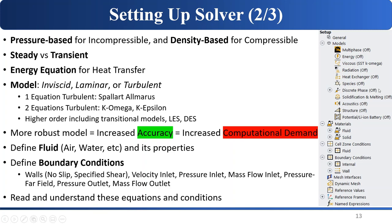In the general solver settings in ANSYS Fluent, you choose pressure-based or density-based. For incompressible flow, you use pressure-based because the density isn't changing — that's the definition of incompressible flow. For compressible flow where density changes, you want a density-based solver. You also want to choose steady-state or transient. Transient is when you want to see how things change in time — vortex shedding, eddies, the time-changing evolution of a fluid system. For general drag-lift analysis, steady-state probably works best.